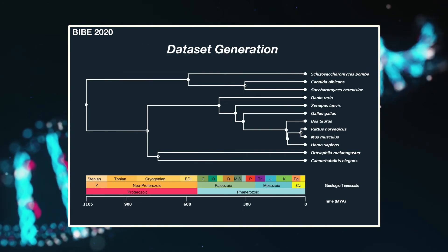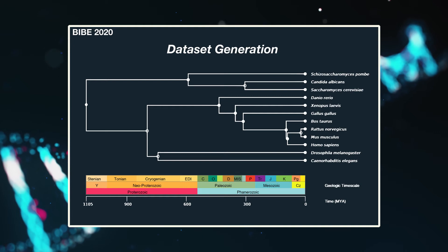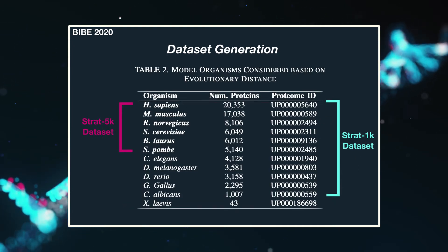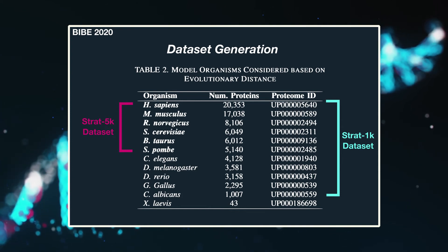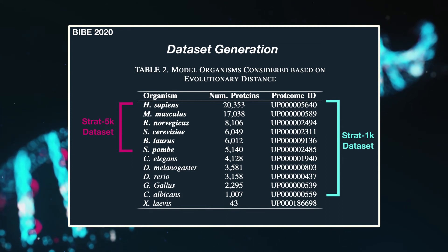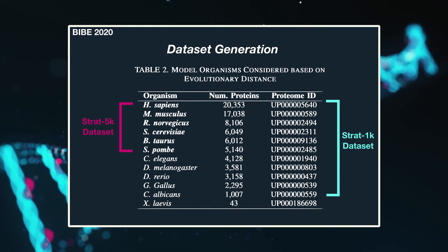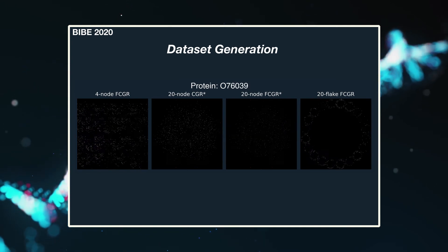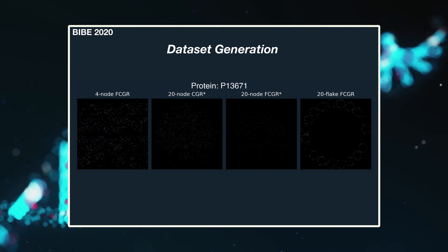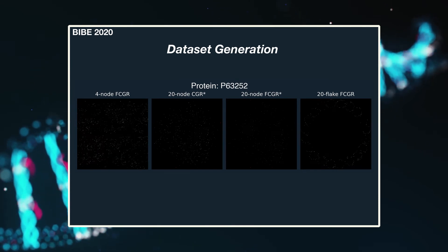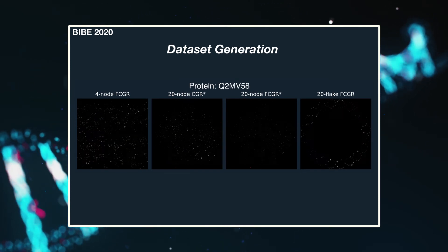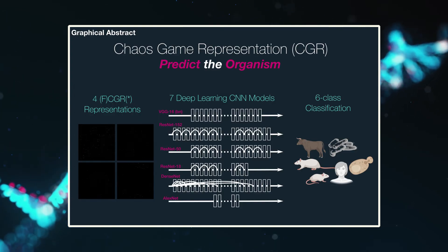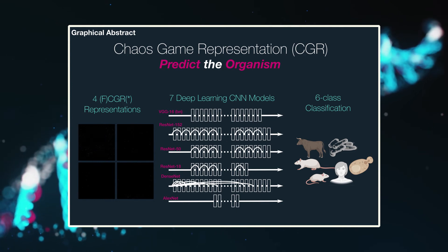We collected proteome-wide sequences for 12 organisms of varying evolutionary distance. Two datasets were created: the first comprised a stratified sample of 1,000 proteins for 11 organisms, and the second a stratified sample of 5,000 proteins for 6 organisms. For each protein, we generated the four FCGR star representations and split these into distinct training, validation, and independent test sets according to a 60-20-20 split. Each representation was then used to fine-tune seven different pre-trained deep-CNN models, and the performance of each representation using each model was reported.